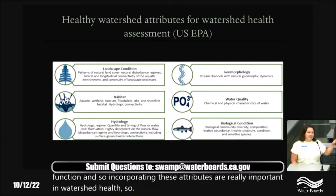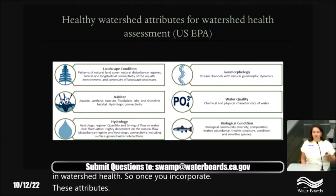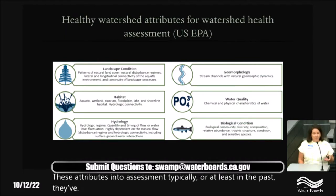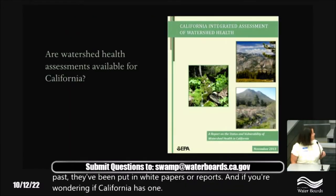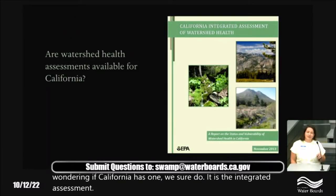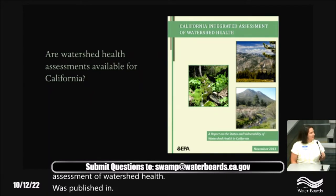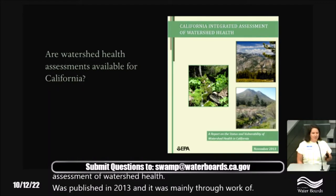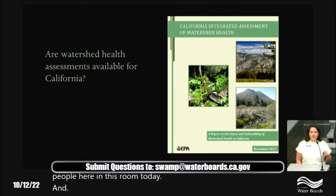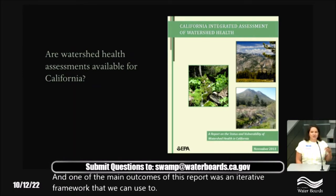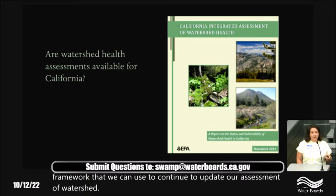Once you incorporate these attributes into assessment, typically they've been put in white papers or reports. California has one: the Integrated Assessment of Watershed Health, published in 2013. It was produced mainly through US EPA work contracted to the Cadmus Group, with review from many people. One of the main outcomes was an iterative framework we can use to continue updating our assessment of watershed health as new data becomes available.